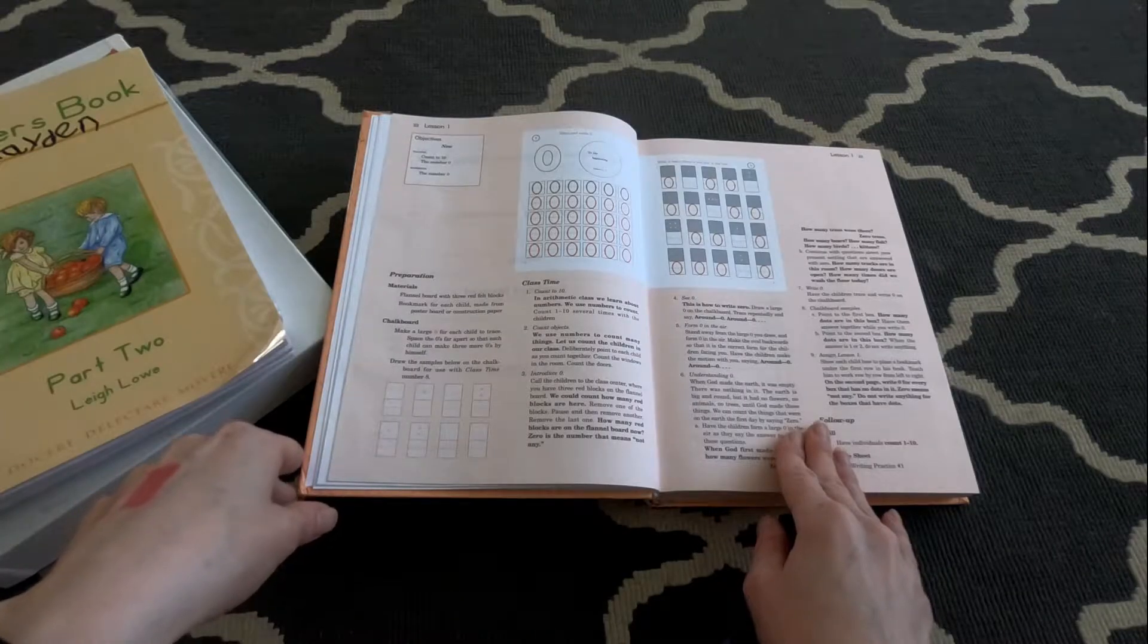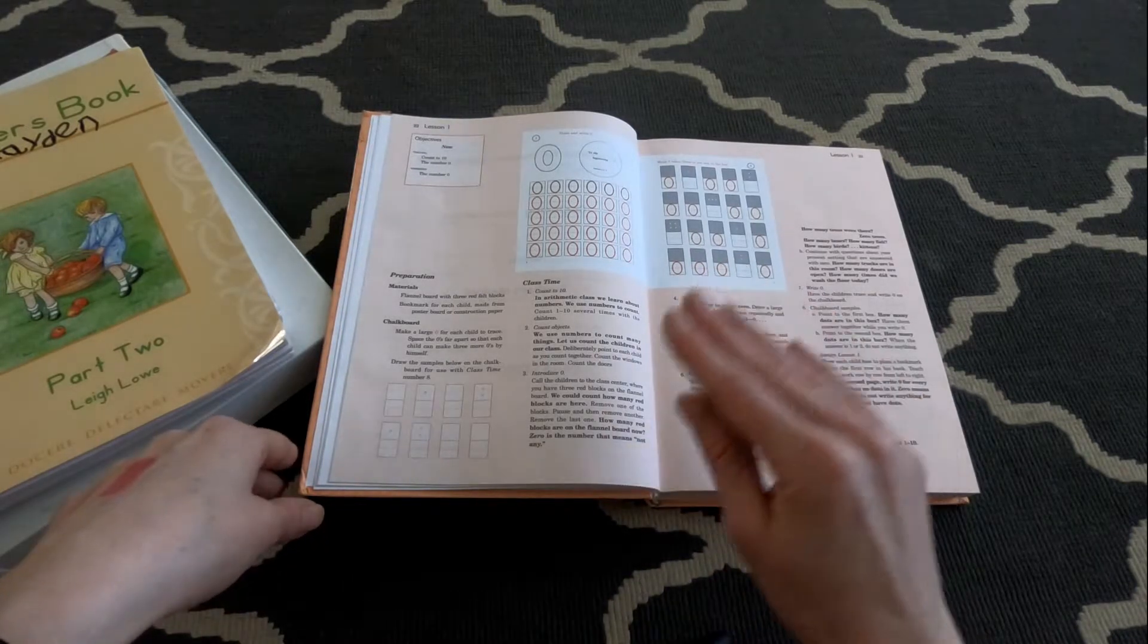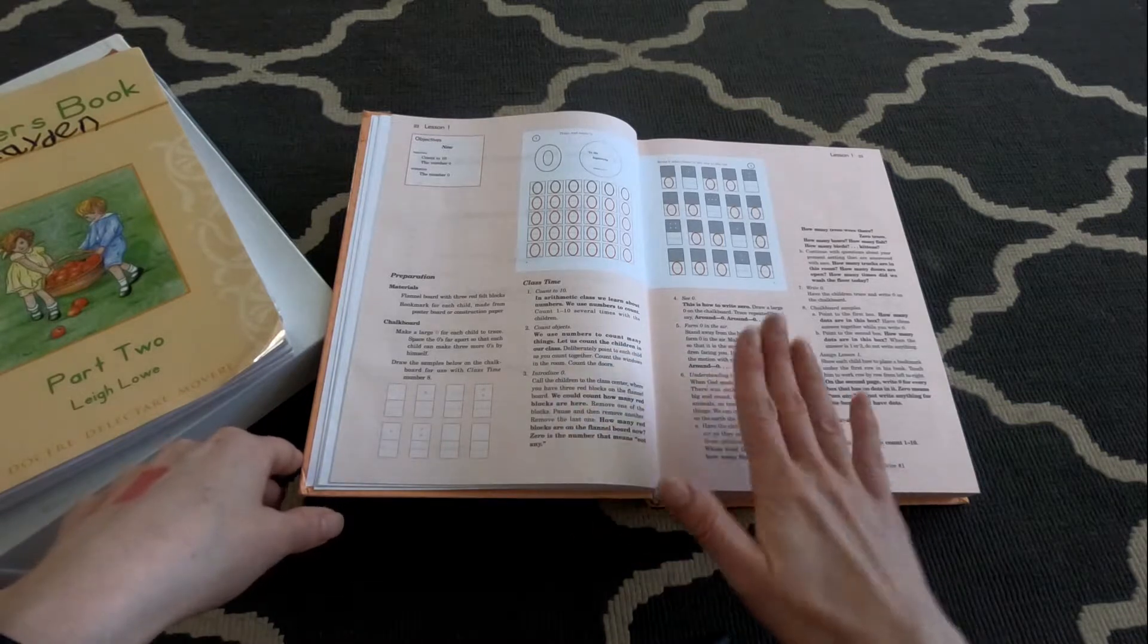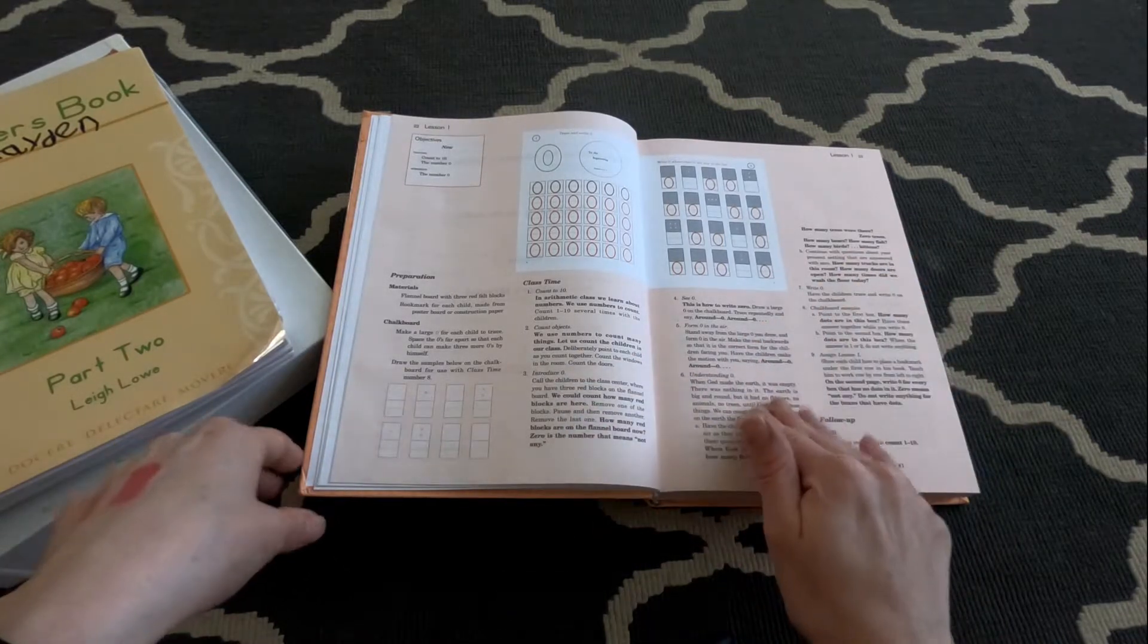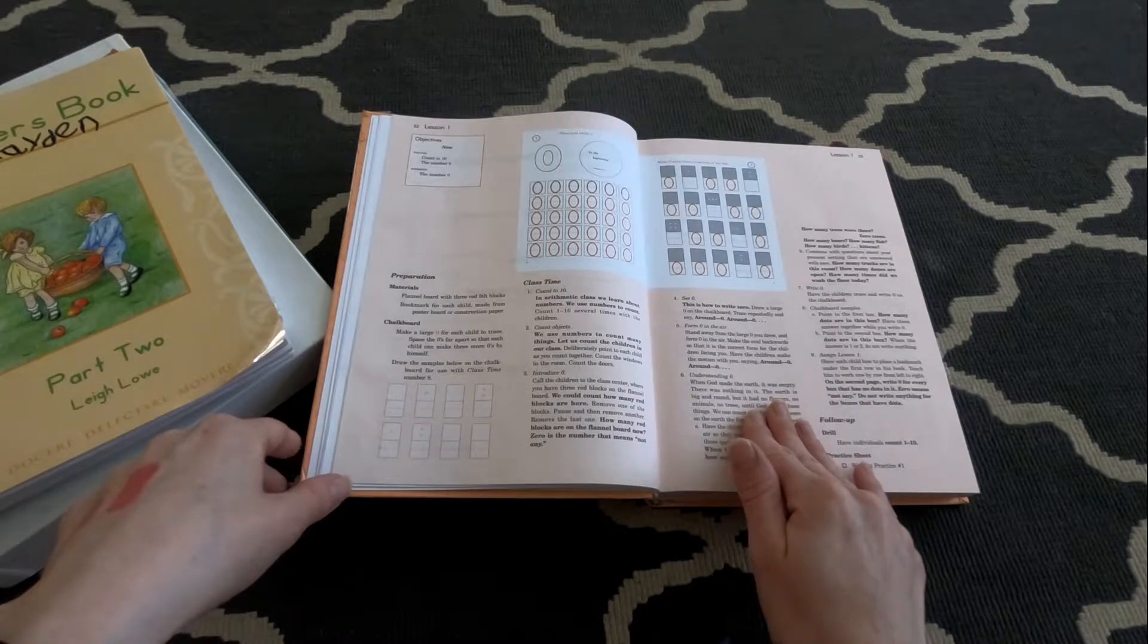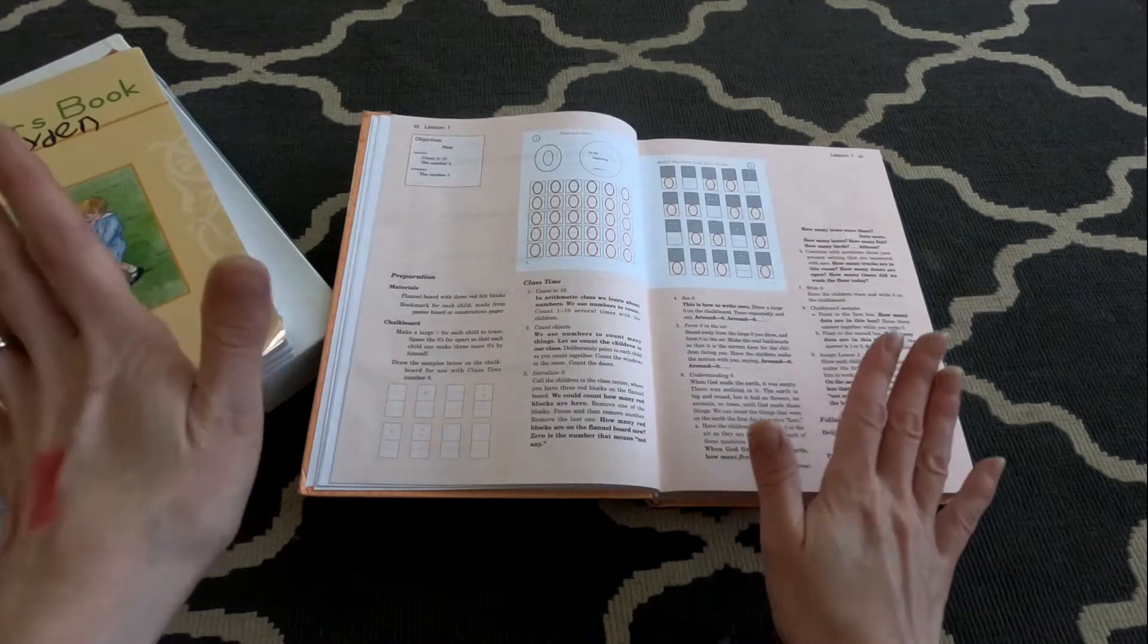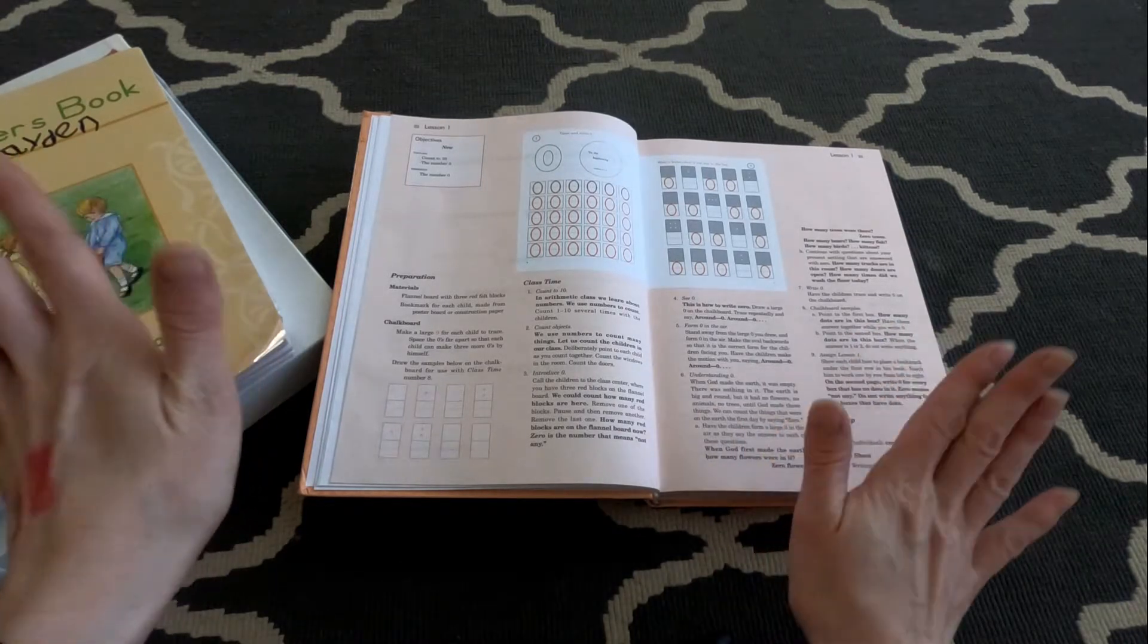The reason I love Rod and Staff math is because I feel like it is very foundational, it is very systematic, and it thoroughly covers the basis of math. Math is not my strong suit, so even though I understand kindergarten math, I just like how it's laid out so I don't have to think through very much. I can just teach from the book.